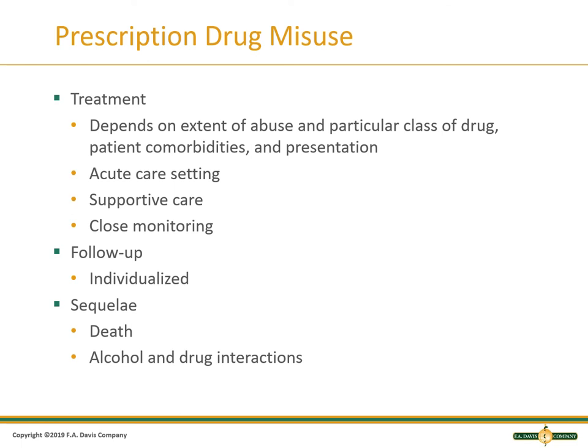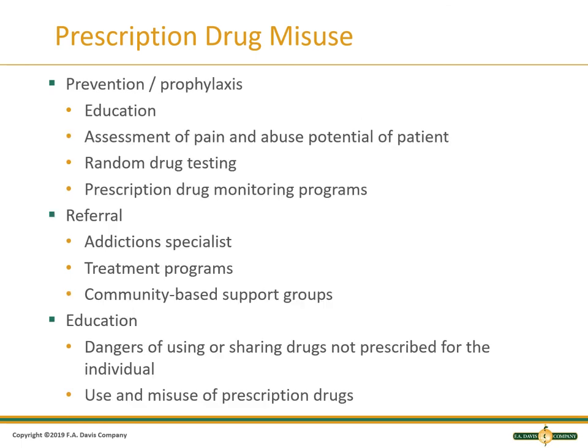Treatment depends on the extent of the abuse and the particular class of drugs — it could require an acute care setting or outpatient, but supportive care, close monitoring, and looking at the support system and community resources is key. Follow-up will be individualized. Unfortunately, sequela can include death from overdose and alcohol and drug interactions. Educate the patient, assess the pain and the abuse potential, telling them the medication is prescribed short term and then other avenues will be explored. We'll do randomized drug testing and prescription drug monitoring programs through the state. Referral to addiction specialists, treatment programs, and community-based supports, with education about the danger of sharing drugs and the use and misuse of prescription drugs.